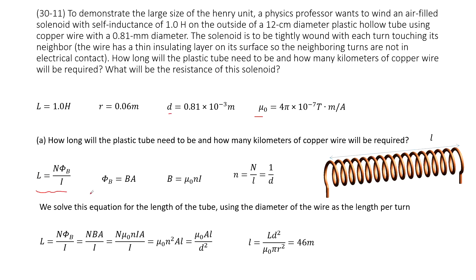In this equation, N is known, Φ_B is magnetic flux. This is magnetic field times A. This B is μ₀NI. And this N can use how many turns for this solenoid divided by length of this solenoid, equal to N over L.